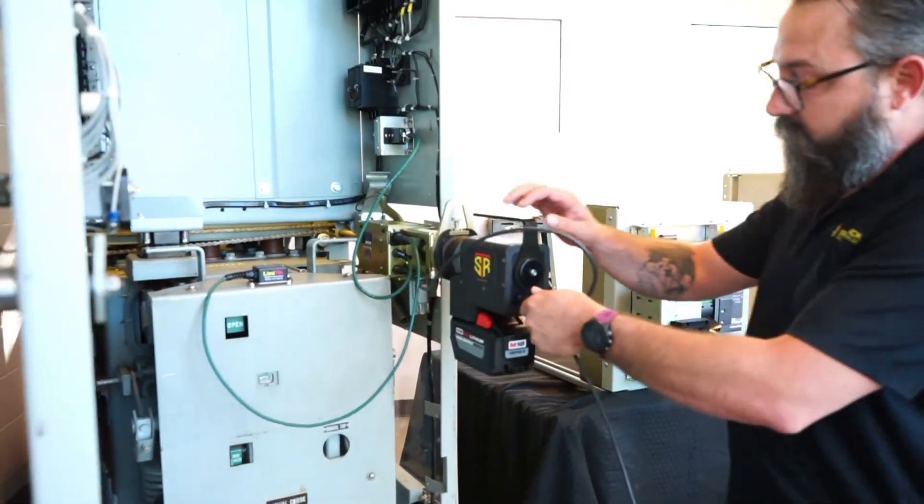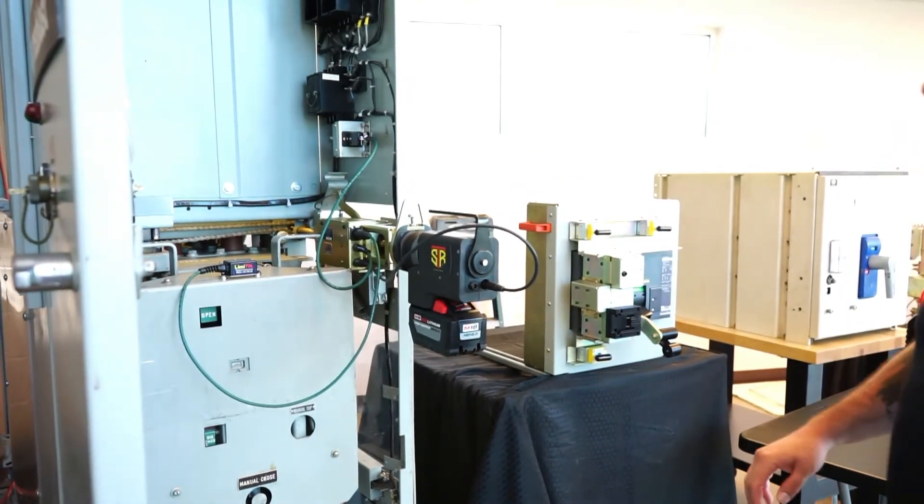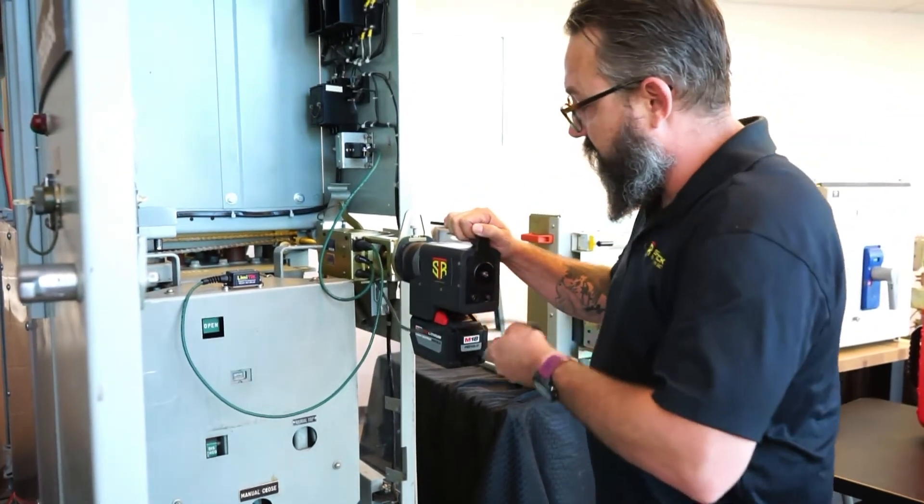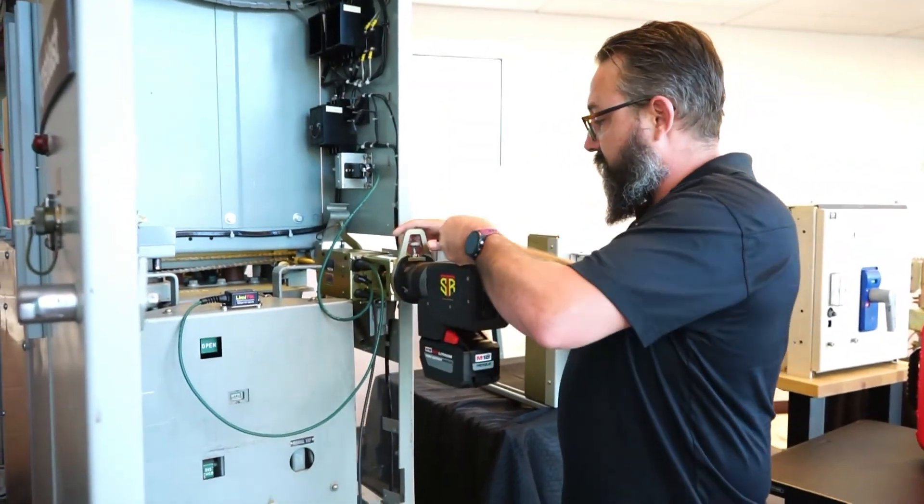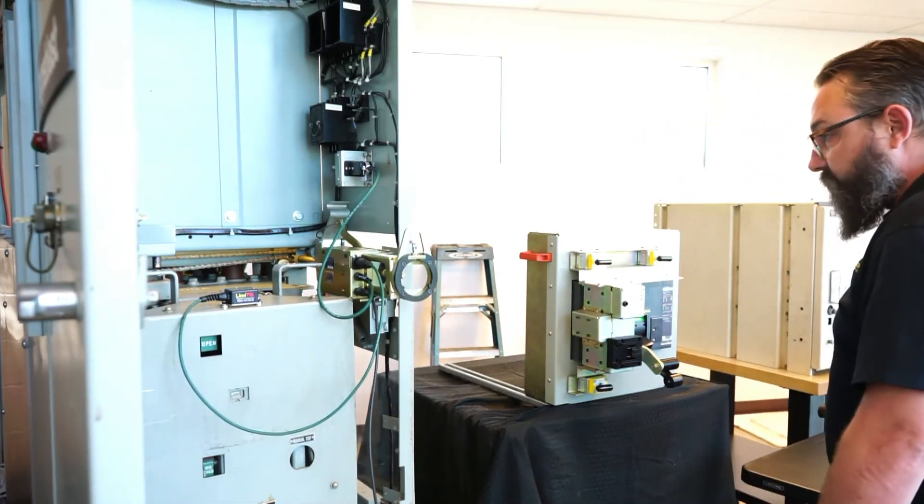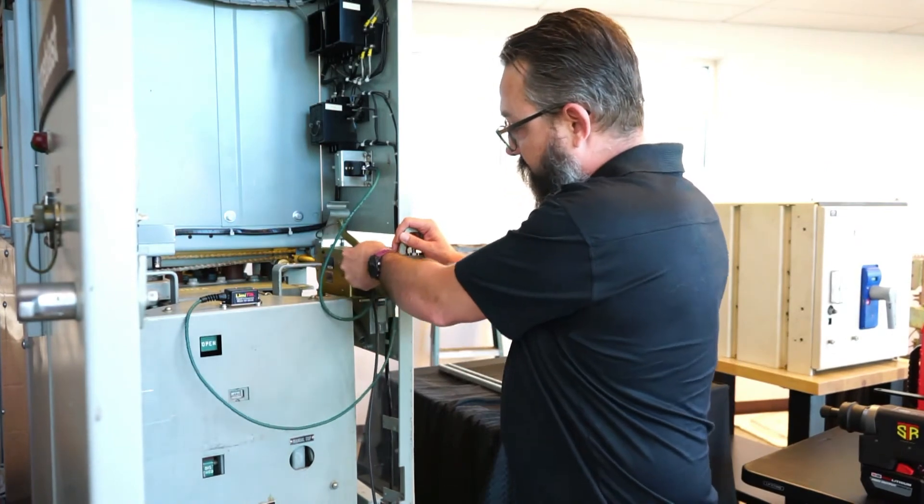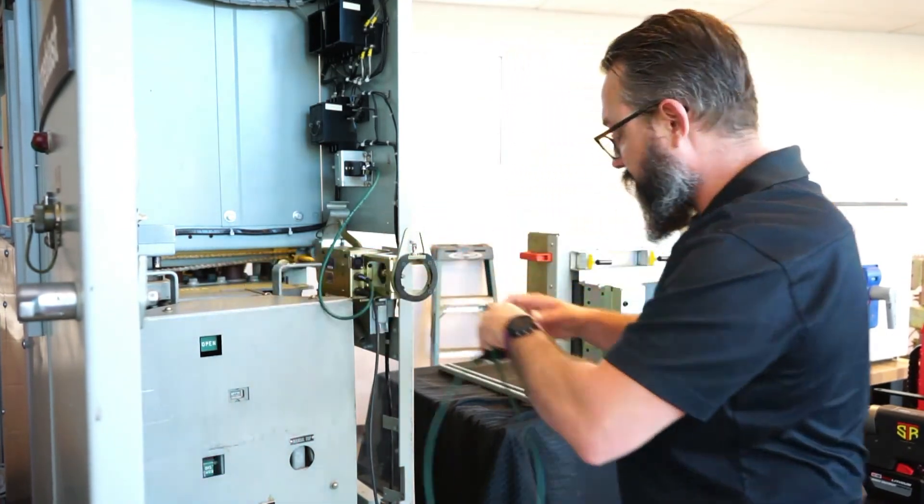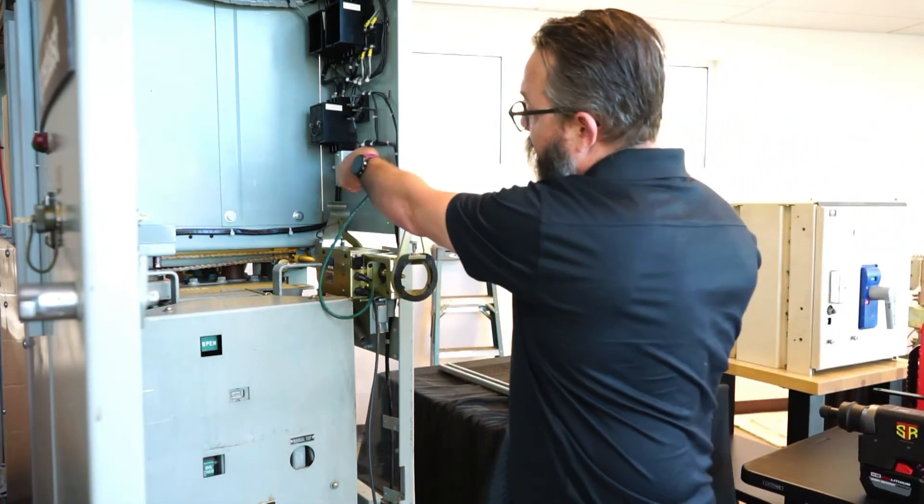At that point, we disconnect our handheld controller, disconnect the motor drive unit, it comes out very simply, unplug our limit tilt, unplug from the breaker.